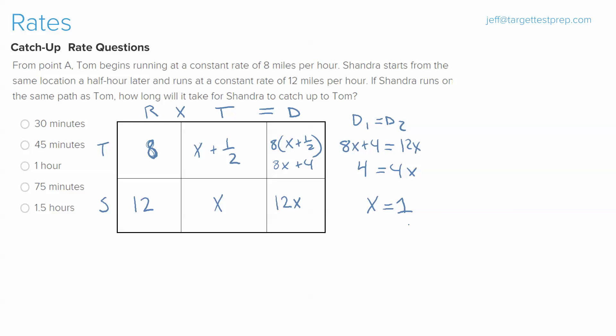Keep in mind the rate originated in miles per hour, which means the x stands for one hour. So if we take this and go to Sandra's time box, we see that the time it took for Sandra to catch up to Tom was one hour.